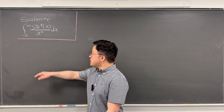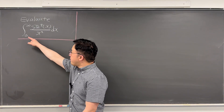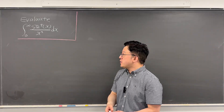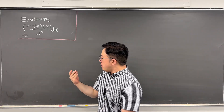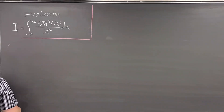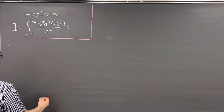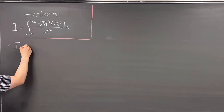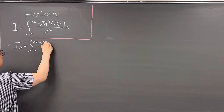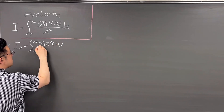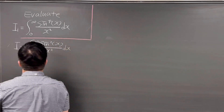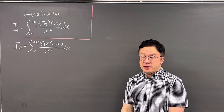Okay, here's the question. The question is: what is the value of this integral from 0 to infinity of sine to the power of 4x over x squared dx? First of all, let me call this integral I1. And then I'll be starting with this integral — let me call this I2 — as the integral from 0 to infinity of sine squared of x over x squared dx, just to use the regular integral at the end.